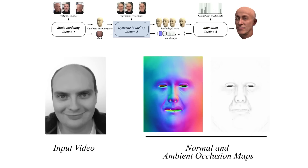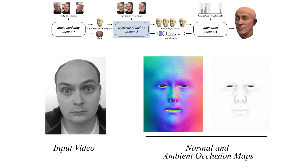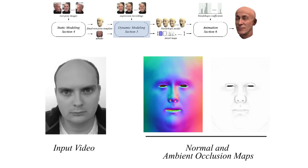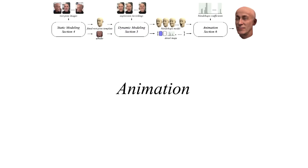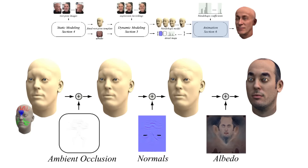In order to capture small-scale details such as wrinkles, we automatically extract a set of dynamic detail maps from the recorded video frames. A corresponding ambient occlusion map is extracted for each frame. To augment the blend shape rig, we synthesize dynamic details on the fly by blending the reconstructed detail maps using a local strain measure evaluated on the posed blend shape meshes.